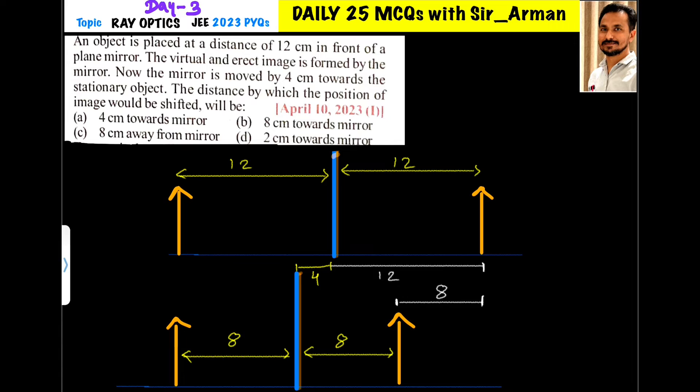Let us assume this is the new position of the mirror. Now we have shifted towards the object, so the new object distance is 8 cm. From the mirror, the new image distance is also 8 cm.